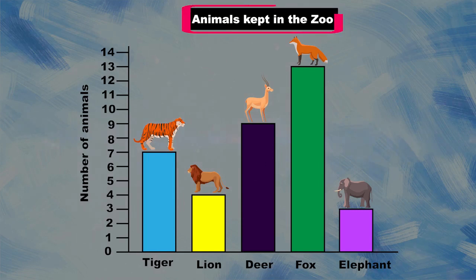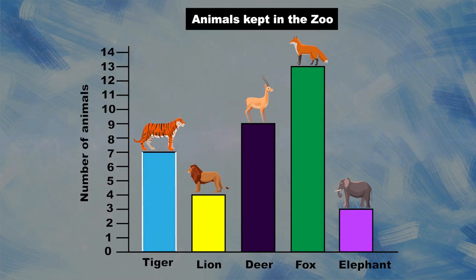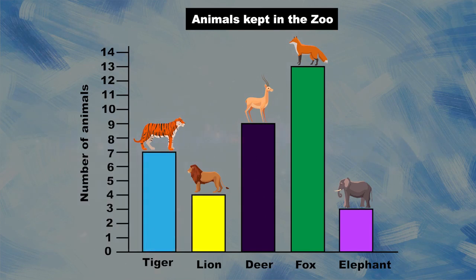In this bar graph the title is 'Animals Kept in the Zoo.' Now, next question: how many tigers are there in this zoo? This is an important question and you should understand how to find the answer. It is very simple — we have to see the number of tigers. You can see the tiger bar is reaching to seven, so there are seven tigers in this zoo.